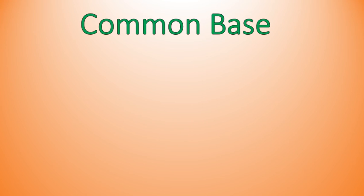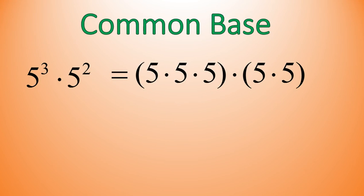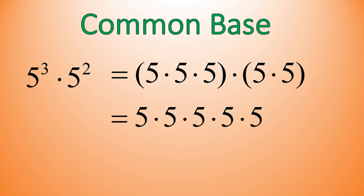When you have a common base and you're multiplying exponents like this — 5 to the power of 3 times 5 to the power of 2 — we could expand these out: 5 times 5 times 5, that's 5 to the power of 3, times 5 times 5, which is 5 to the power of 2. That works out to being 5 times 5 times 5 times 5 times 5, or in other words, 5 to the power of 5 — our base of 5 being raised to the power of 5.